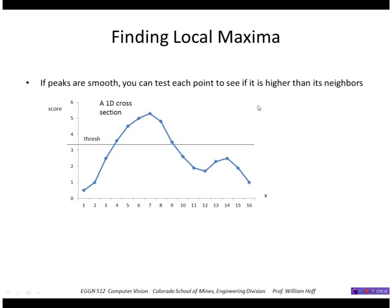So one way to find a local maximum is by testing to see whether the score at that point is greater than its nearest neighbors. This point is a peak because it's greater than the neighbor here and the neighbor here.